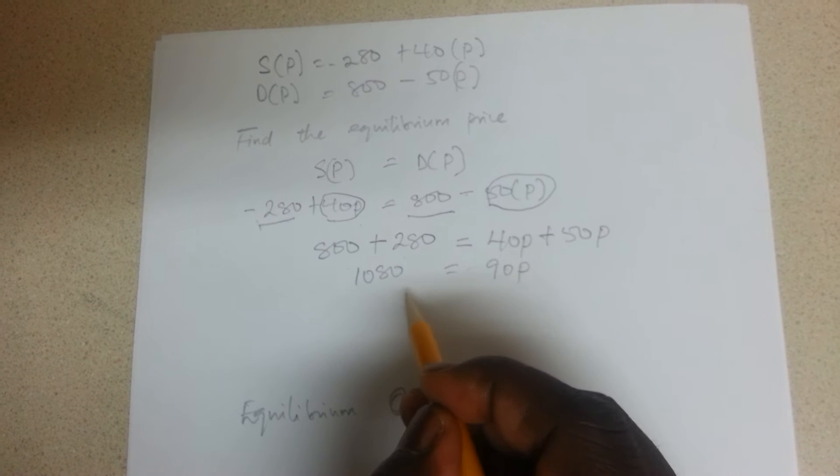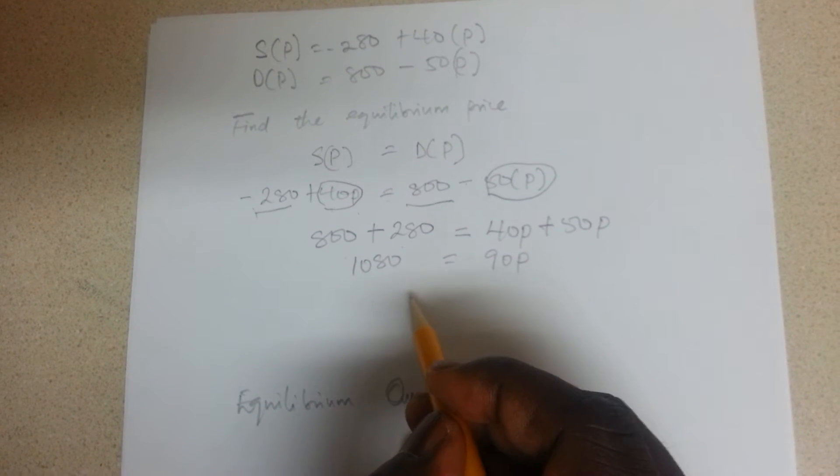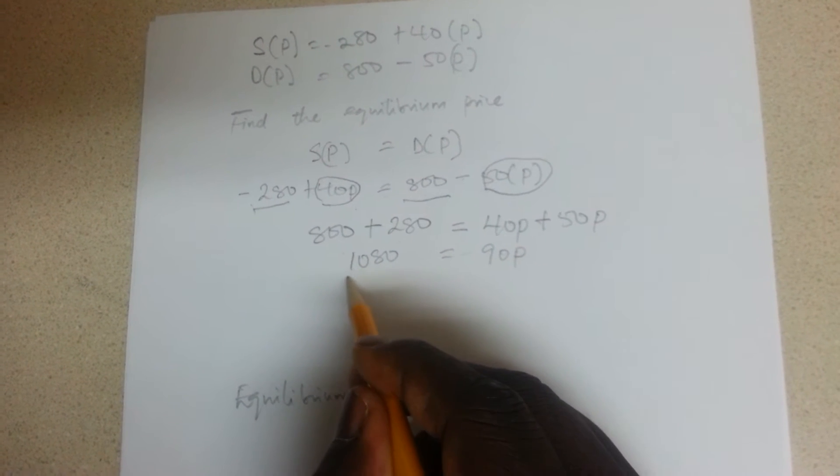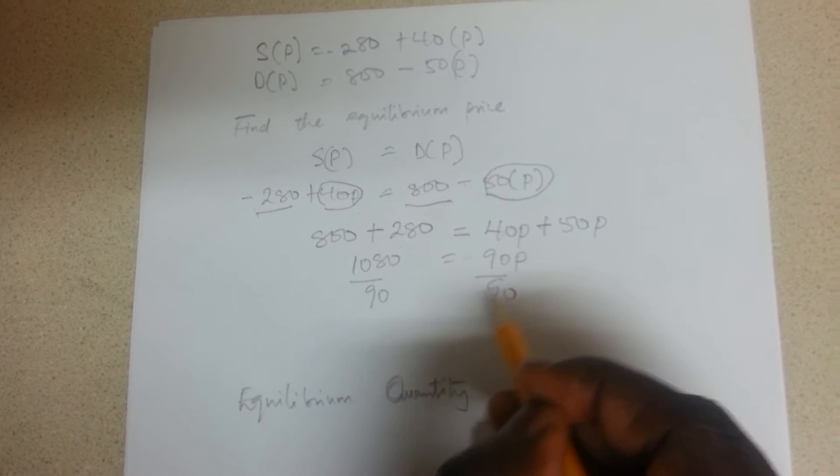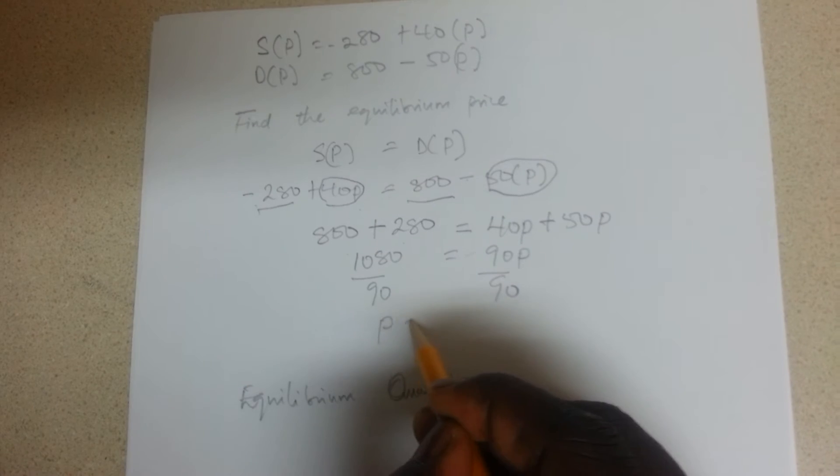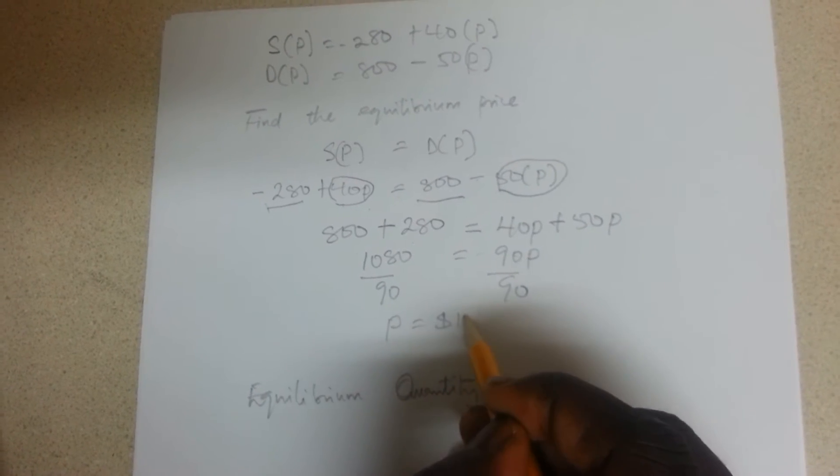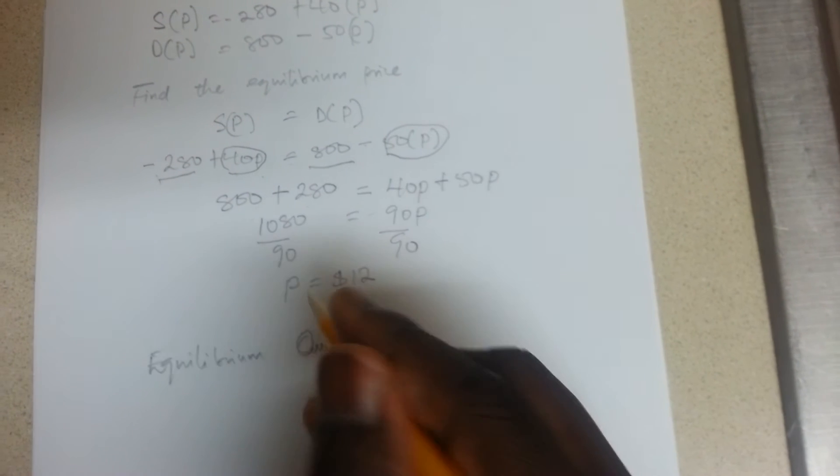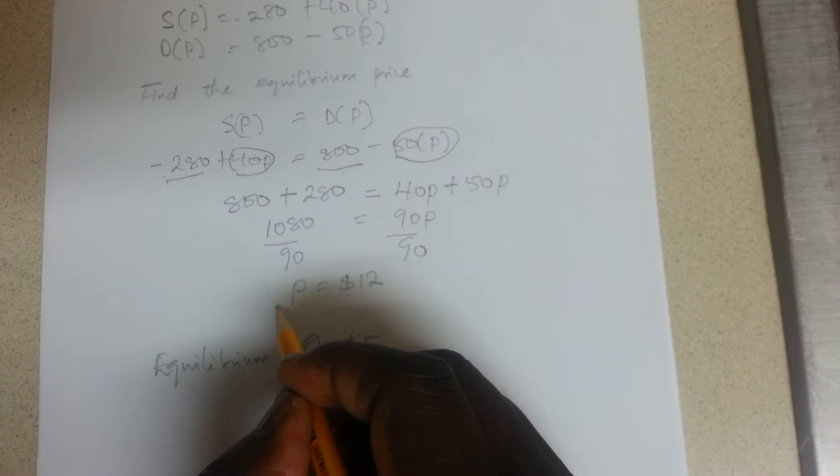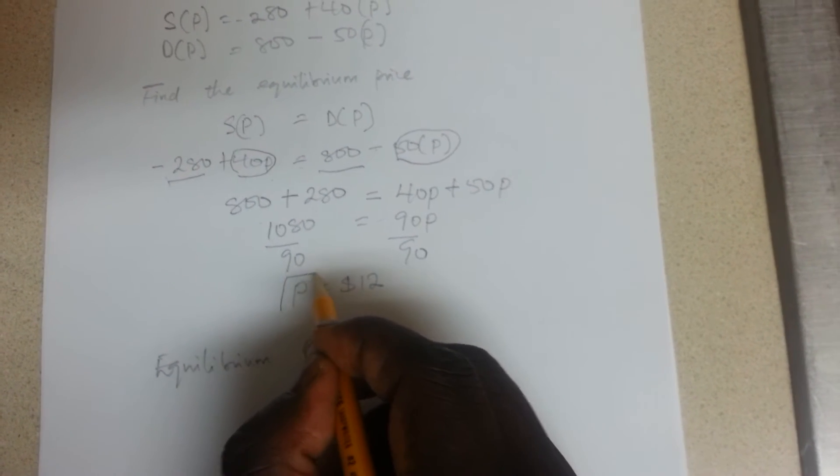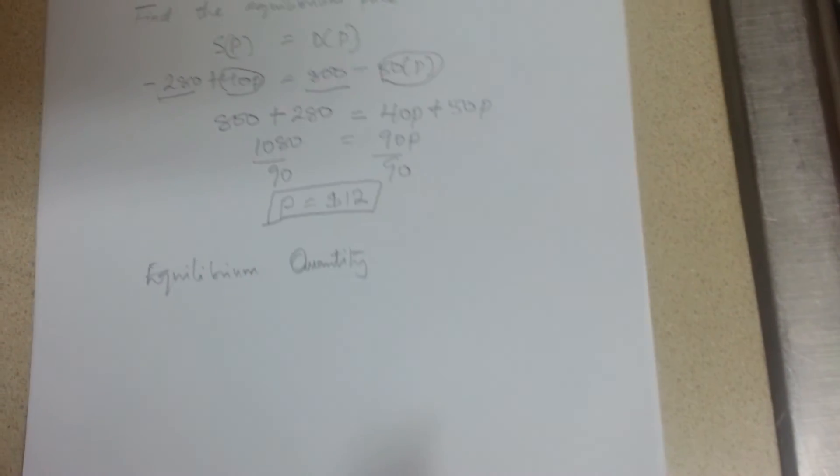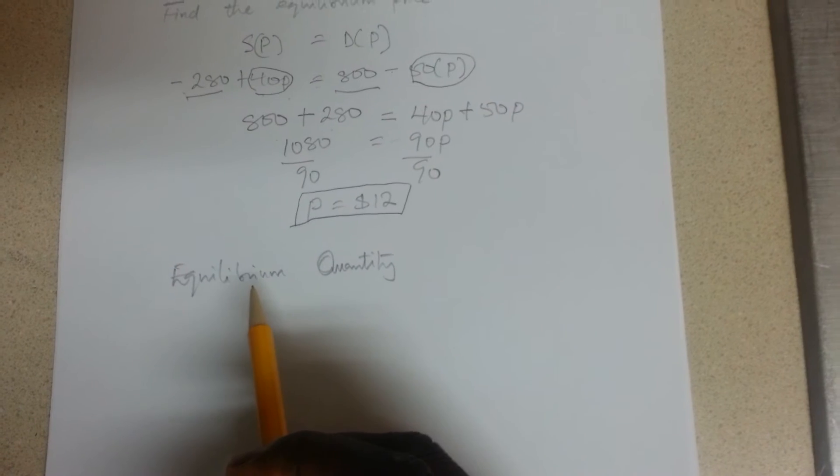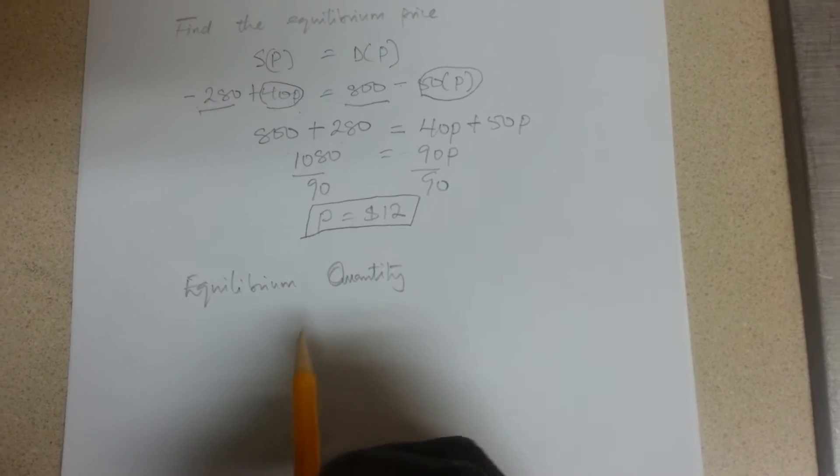So when you add these together you get 1080 and the sum will give you 90P. When you divide both sides by 90, P will be $12. Price is always in dollars, don't forget that. So that's your price.